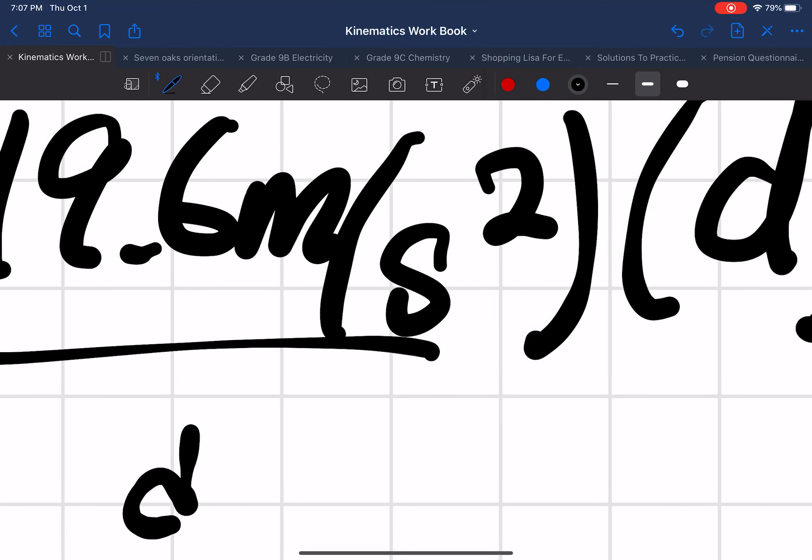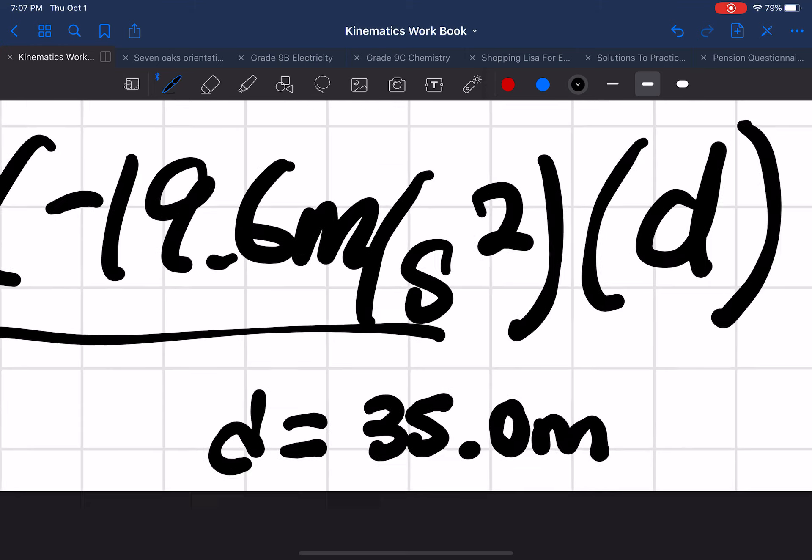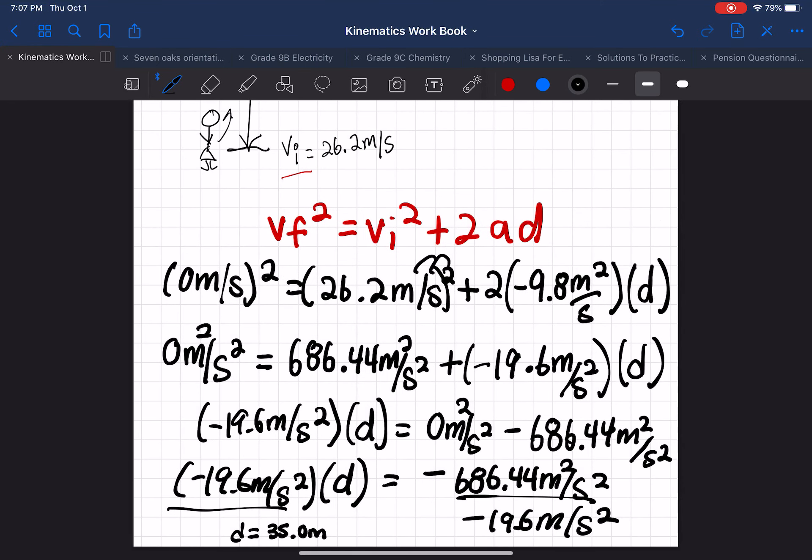And then our d value, d equals 35.0 meters. I just ran out of space, so I had to make it smaller. So that is the answer here, d equals 35.0 meters. So look through the question again, see if you understand it. Remember, our last part, the last step to solving it is double-checking if 35 meters makes sense. Is it reasonable?